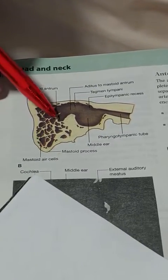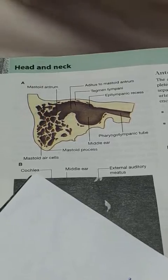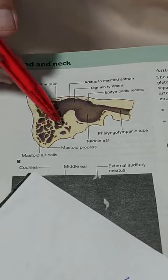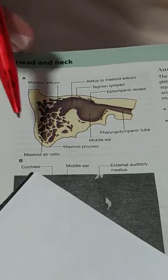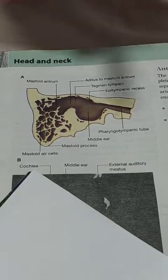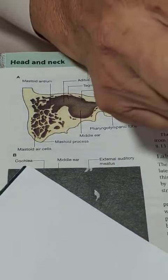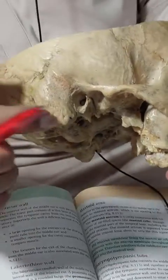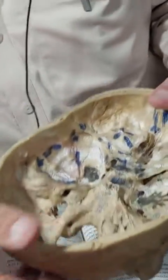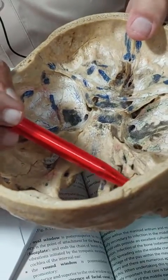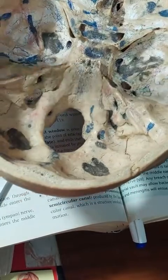The mastoid process is a pneumatic bone, having air-containing spaces which are also called mastoid air cells. These mastoid air cells, present in the mastoid process, are separated from the posterior cranial fossa and the sigmoid sinus by a very thin plate of bone.